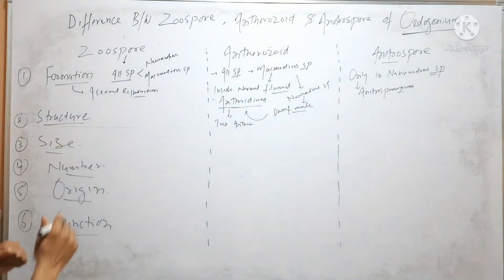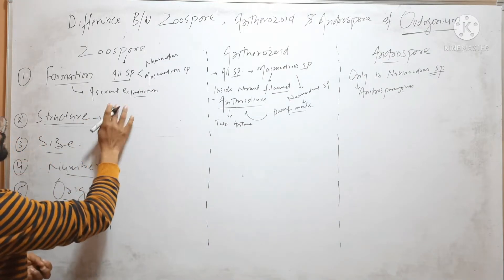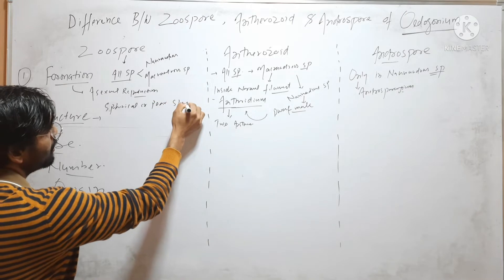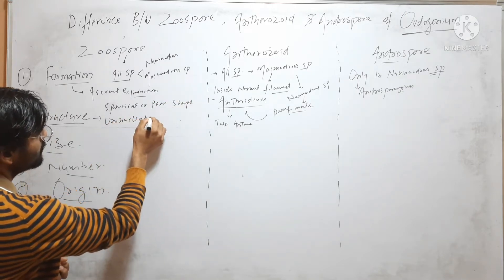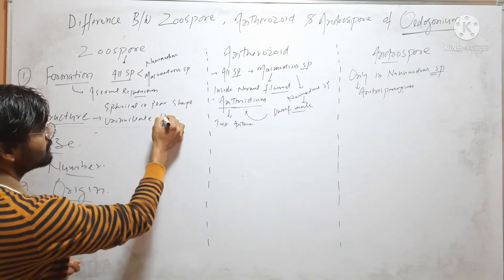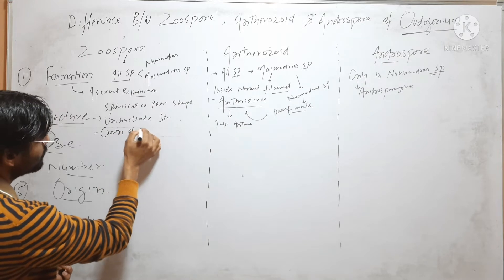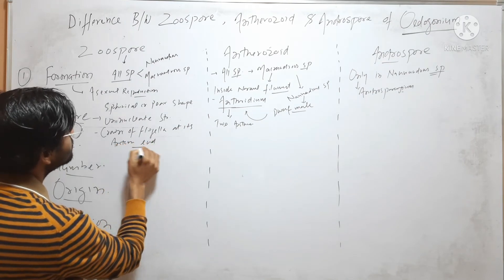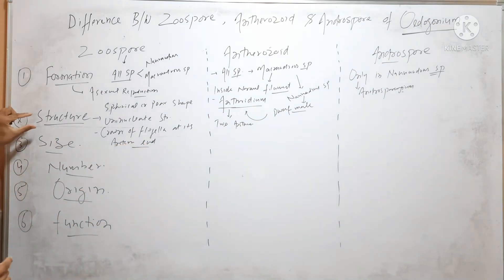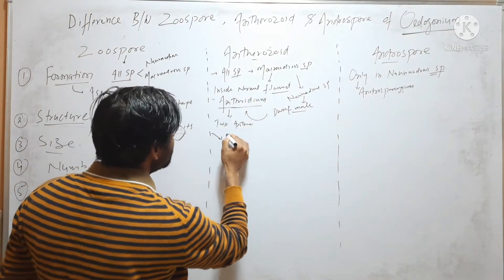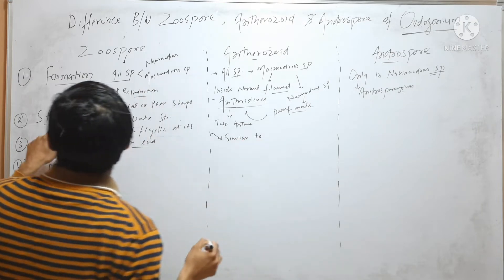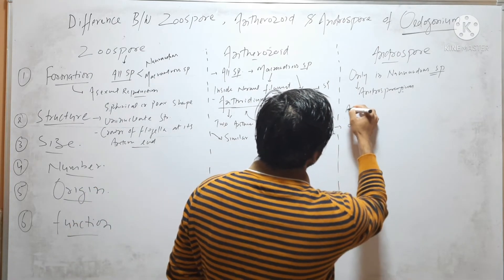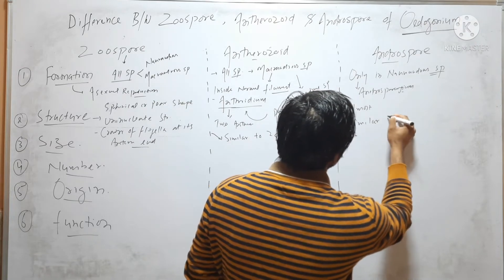The second parameter is Structure. Zoospore is a spherical or pear-shaped uninucleate structure which has a crown of flagella at its anterior end. The structure of Antherozoid is similar to Zoospore, and the structure of Androspore is also almost similar to Zoospore.